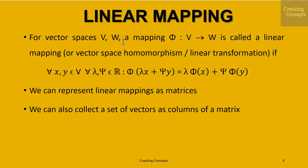For vector spaces V and W, a mapping phi from V to W is called a linear mapping, or vector space homomorphism, or linear transformation, if for all x and y which are vectors of V and for all lambda and psi which are real numbers, phi of lambda x plus psi y is equal to lambda times phi of x plus psi times phi of y.